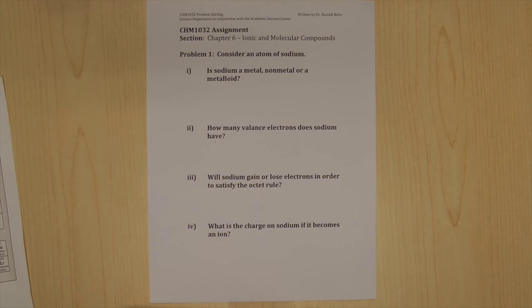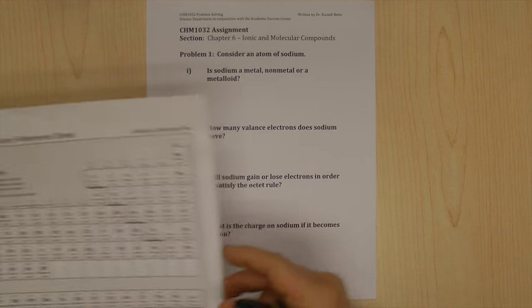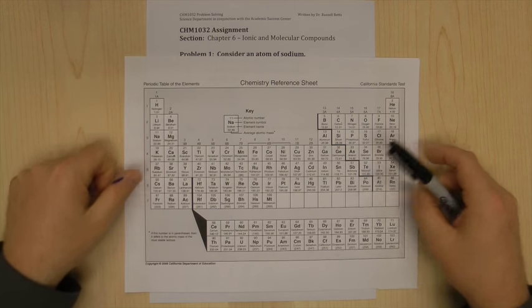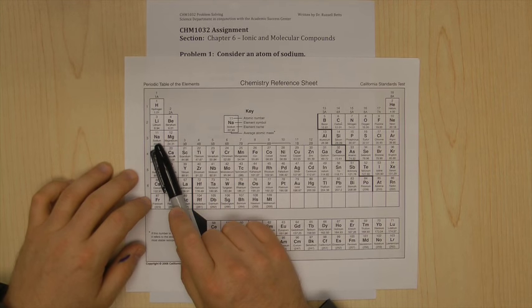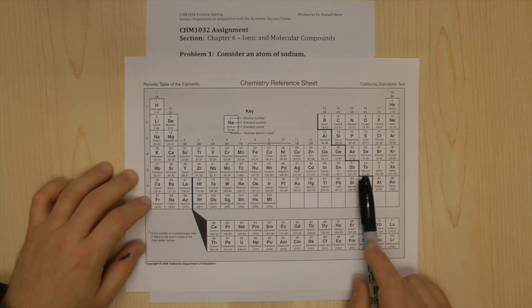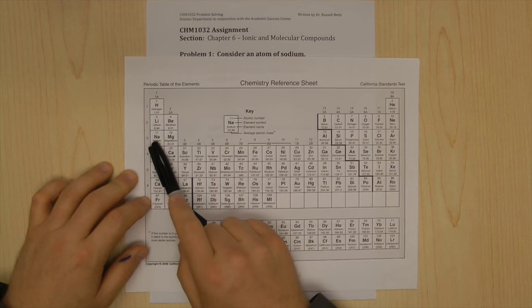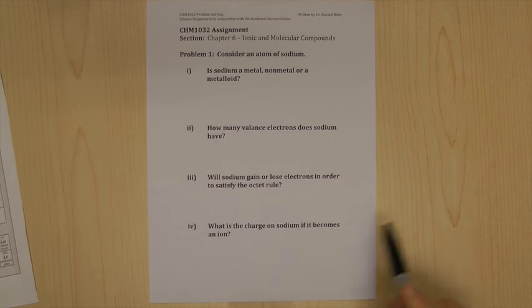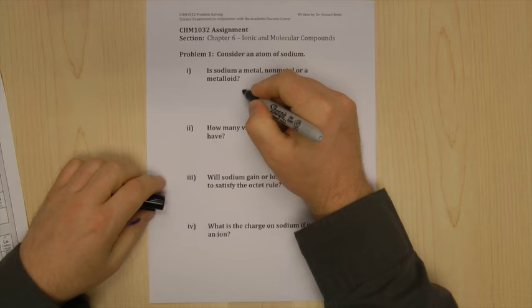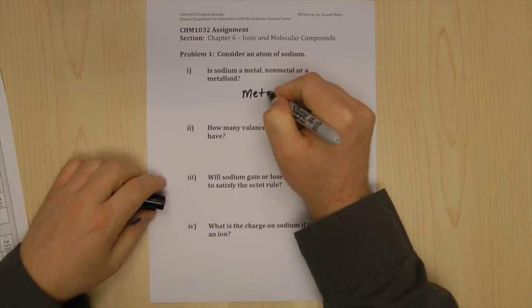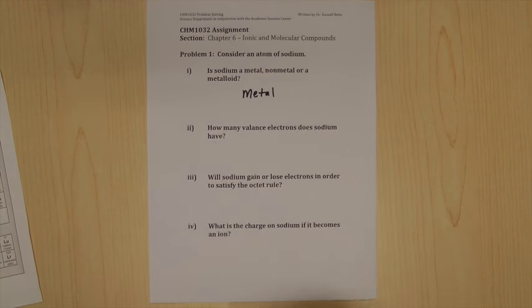All right, consider an atom of sodium. Here I am considering it. All right, well that's a straightforward question. Let's bring up the periodic table. Over here on the far left, that's sodium. Sodium is on the far left hand side of the stair step. So sodium is a metal. So let's write down metal. All right, that was pretty easy.